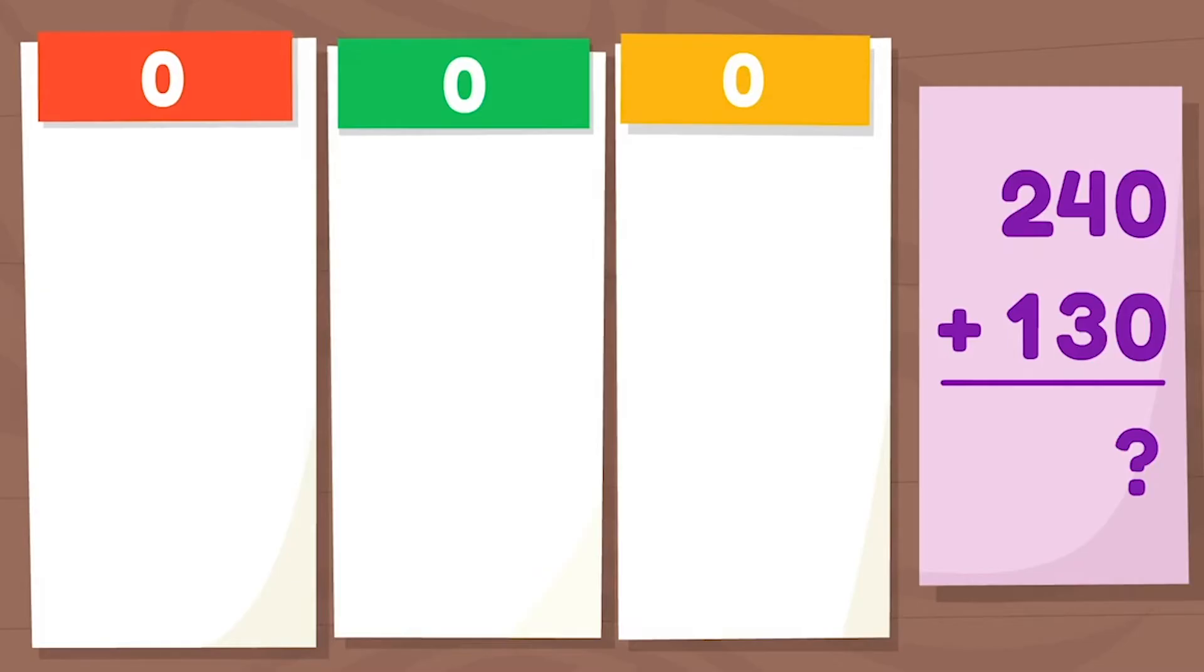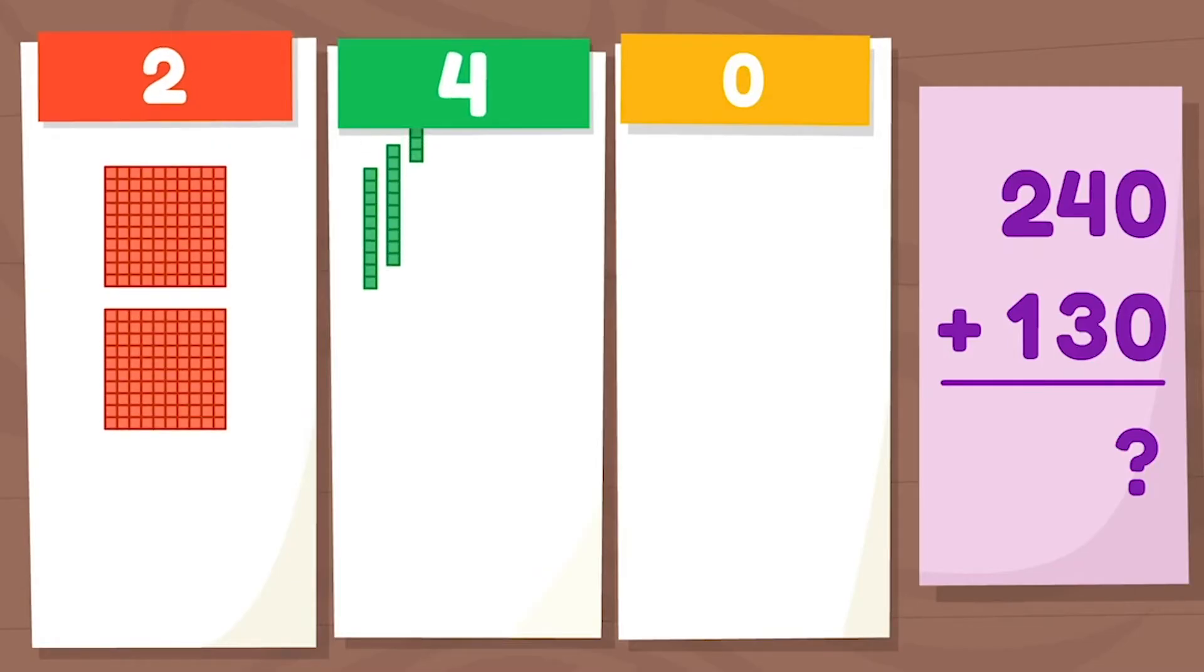which is the same as two hundreds and four tens. Now we want to add 130. There are zero ones in both of these numbers, so let's focus on the tens and hundreds first. Let's add the tens.